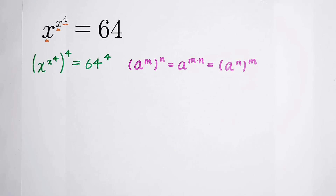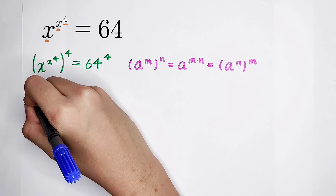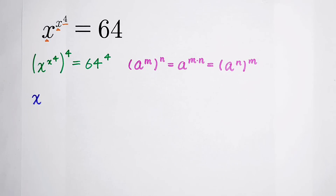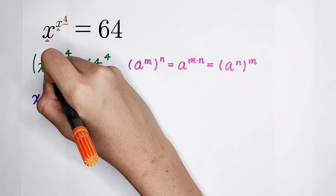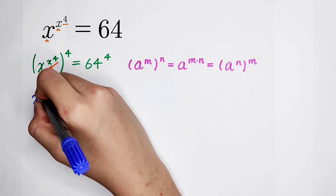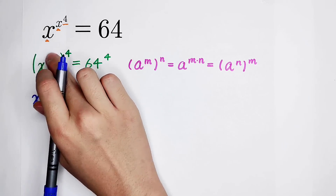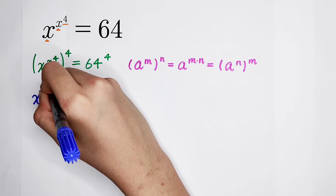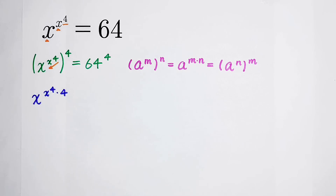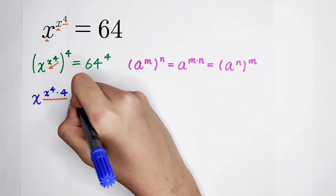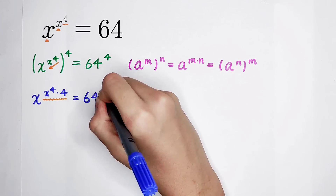The left-hand side can be changed. Now pay attention: in the bracket, the exponent is x to the power of 4. However, we calculate it from top to bottom. So x to the power of m, where m is x to the power of 4 and n is 4, gives us m times n — it is x to the power of x to the power of 4, times 4. So this is the new exponent.